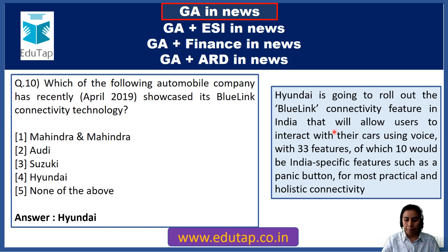Question 33: International Mine Awareness Day and Assistance in Mine Action is celebrated on which day? The answer is April 4th every year. The theme is 'United Nations promotes SDGs — Safe Ground, Safe Home.' We have now covered April 2nd, April 4th, and April 7th as important days.